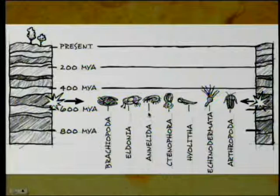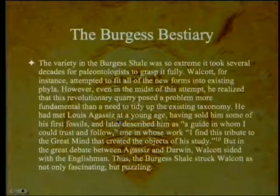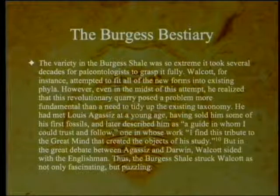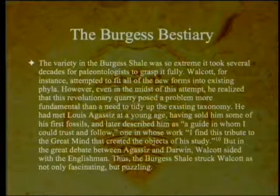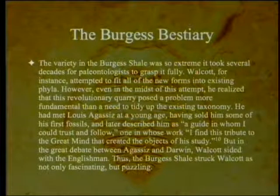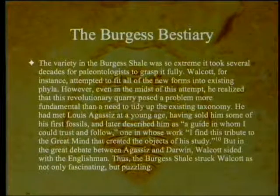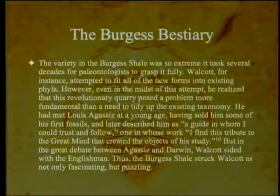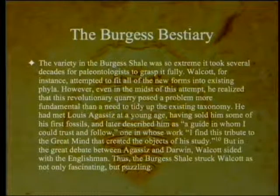Here's another drawing showing various phyla that originated during the Cambrian explosion. The variety in the Burgess Shale was so extreme it took several decades for paleontologists to grasp it fully. Walcott attempted to fit all of the new forms into existing phyla. He had met Louis Agassiz at a young age, having sold him some of his first fossils, and described him as a guide in whom he could trust. But in the great debate between Agassiz and Darwin, Walcott sided with the Englishman.